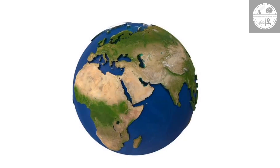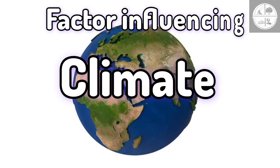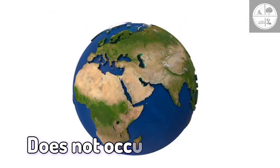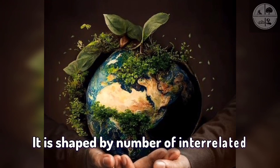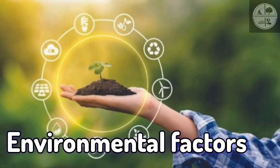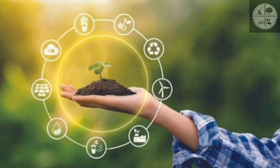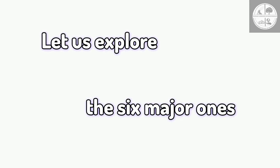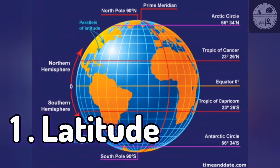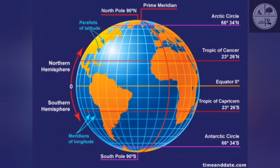Climate does not occur by accident — it is shaped by a number of interrelated geographical and environmental factors. Let us explore the six major ones. Number one: latitude. Latitude plays a big role. Areas near the equator are generally hotter because the sun's rays hit them more directly.